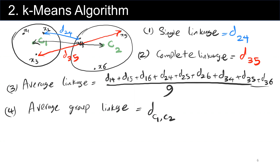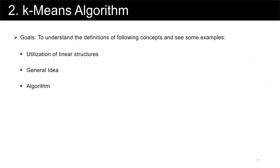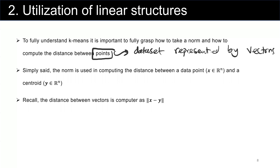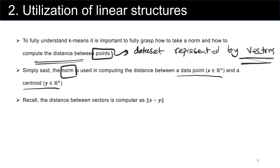Now I'm going to talk about k-means clustering and how it leverages this similarity. K-means clustering is going to utilize linear structures. To fully understand k-means, it's very important to grasp how to take a norm and how to compute the distance between two points — our data sets, represented by vectors. Linear structures play a pivotal role in two ways: representing the data in terms of vectors, and finding distance and norm between different points. Simply said, norm is used to compute the distance between a data point and a centroid.